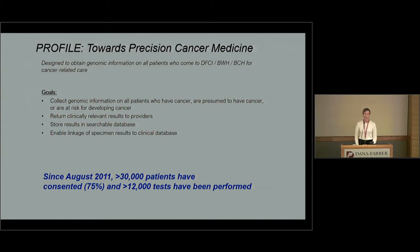Profile, which many of you may have participated in, is a precision cancer medicine project. More than 30,000 patients have consented since 2011, and we've done more than 12,000 tests across the whole institute, using next-generation sequencing of patients' tumors to understand their genomic alterations and better direct our therapies. For breast cancer, this has been somewhat less promising than in diseases such as lung cancer, but it has shown there are potential targets we can address through finding alterations in the tumor.